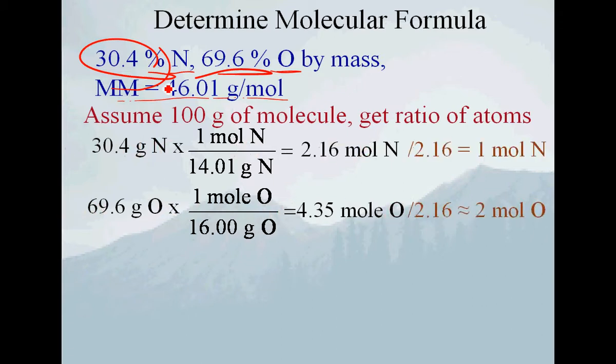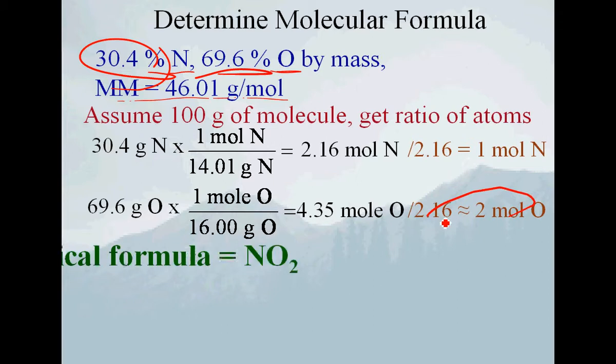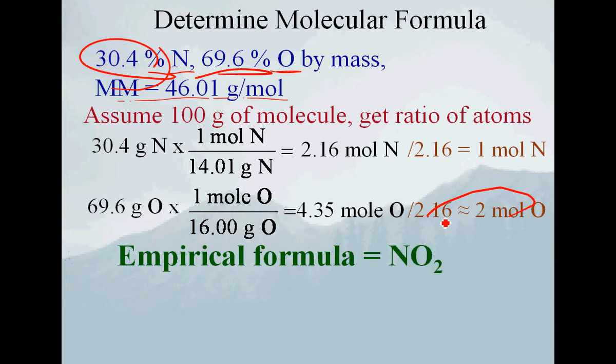Dividing 4.35 by 2.16 is not exactly 2, but remember these are supposed to be small whole number ratios. We should get close to an integer value, or close to a half integer like 2.5 — in that case, we'd multiply everything by 2. So the smallest whole number ratio is 1 nitrogen to 2 oxygens, and our empirical formula is NO₂.